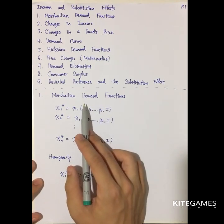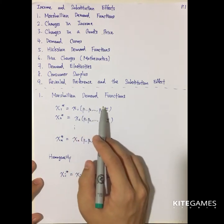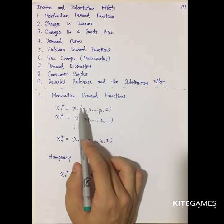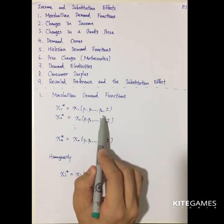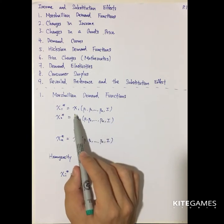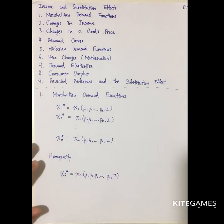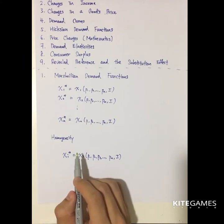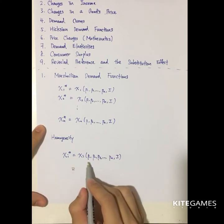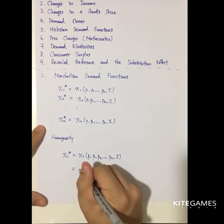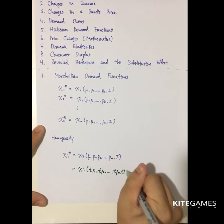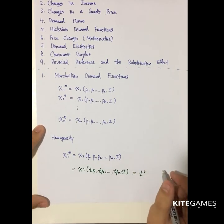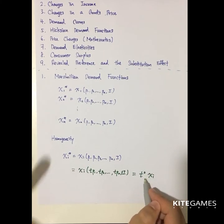The demand function you come across in high school or early undergrad is usually the Marshallian demand function, where x1, x2, up to xn are functions of p1, p2, up to pn, and income i. One key property is that Marshallian demand is homogeneous of degree zero, meaning if you multiply all prices p1 through pn and income i by t, the result equals t raised to the power zero times xi.